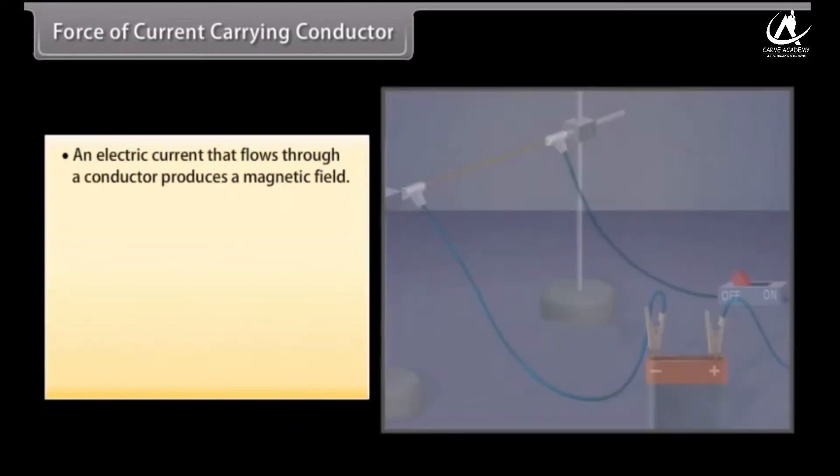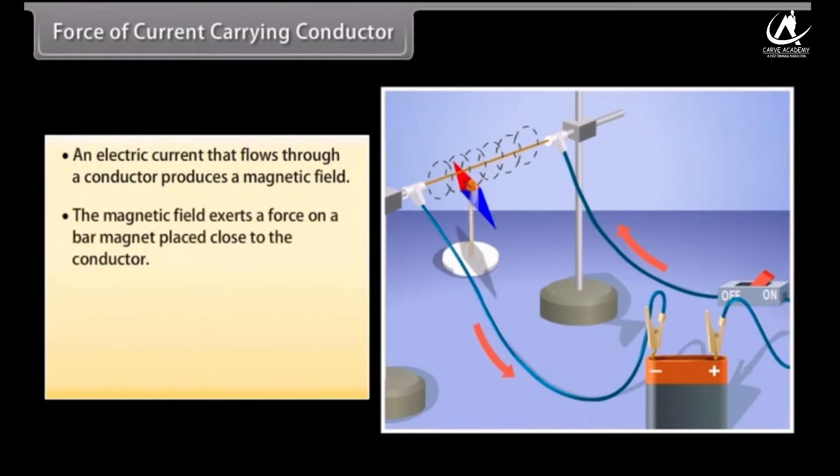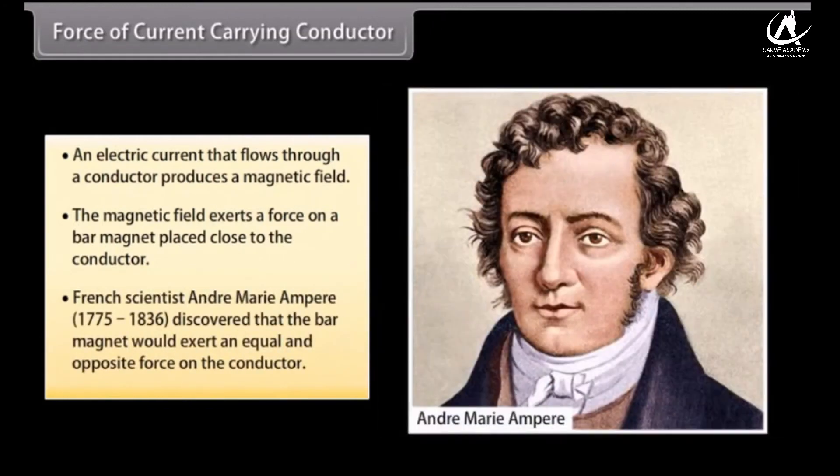Force of current carrying conductor. We have seen that an electric current that flows through a conductor produces a magnetic field. The magnetic field so produced exerts a force on a bar magnet placed close to the conductor. French scientist André-Marie Ampère, 1775-1836, discovered that the bar magnet would also exert an equal and opposite force on the conductor.